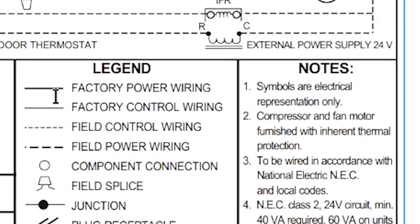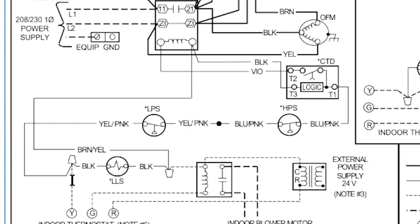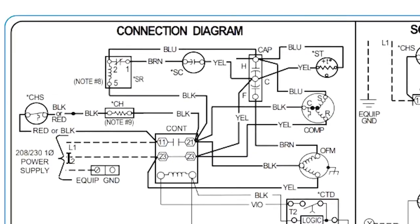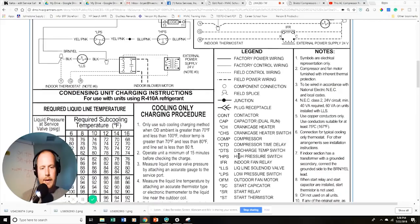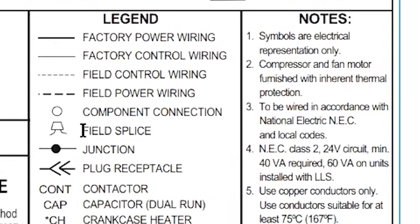These are all pretty standard things: factory power wiring is a solid line, factory control wiring is a lighter solid line, field control wiring is a dashed line. When you see dashed lines, those are lines you would actually have to add in the field. Solid lines are wires inside the appliance itself — the dashed lines here are your high voltage lines that you're wiring in.